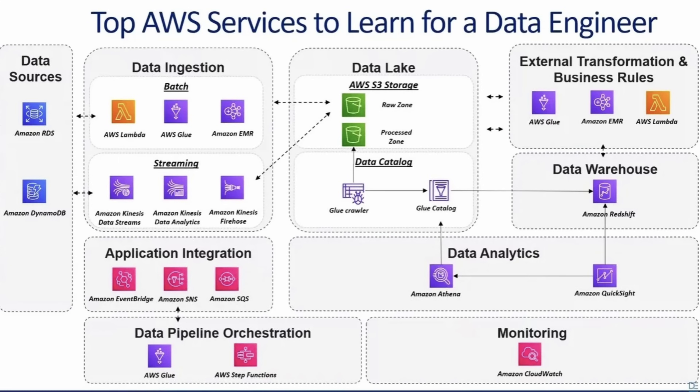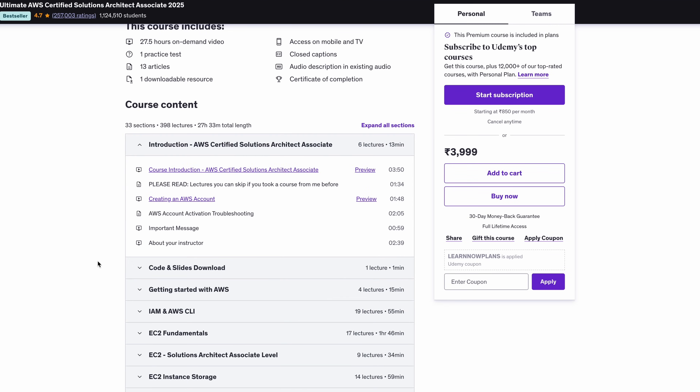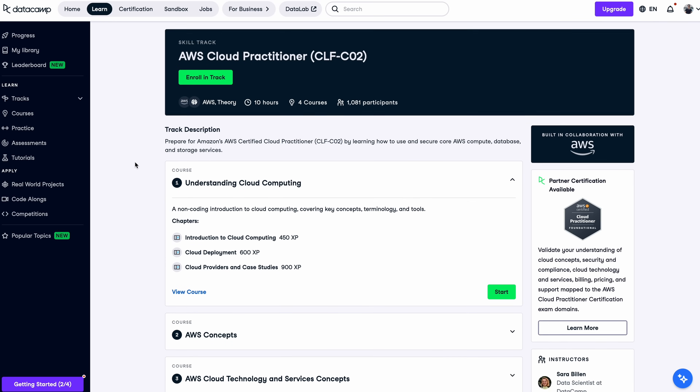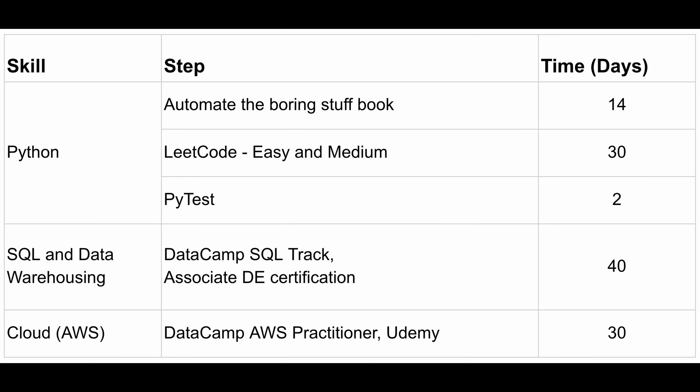Step four is learning cloud. If you haven't picked one yet and you're a beginner, just pick AWS because it has the largest market share. If you're already learning a cloud at your job, stick with that. Key AWS services from a data engineering perspective include S3, EC2, EMR, Redshift, IAM roles, and VPC basics. I recommend a couple of resources: the AWS Solutions Architect Associate course on Udemy, which covers all services, and DataCamp's AWS practitioner course, which gives a good overview of cloud computing and AWS concepts. Learning from documentation and using ChatGPT is also a good idea.